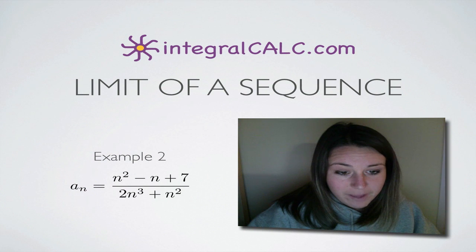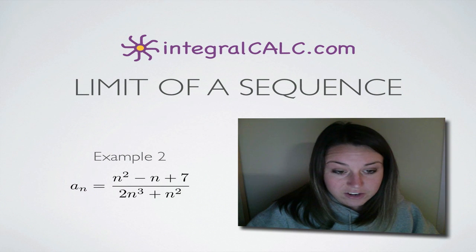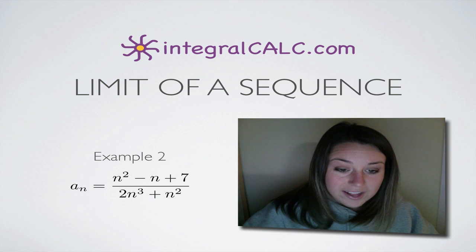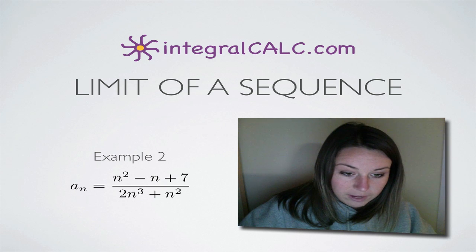The sequence we're given is a sub n, which is the representation of the sequence, equal to the quantity n squared minus n plus 7 divided by the quantity 2n cubed plus n squared.